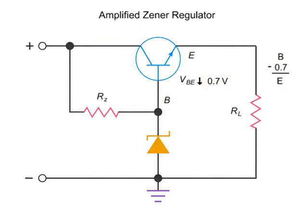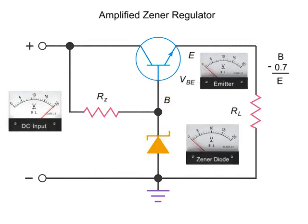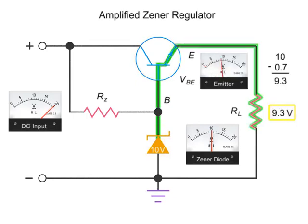Now, if we change the Zener value, observe how the transistor drops the value down 0.7. So at the emitter and the RL load resistor, we see a voltage that is 0.7 volts less than what the Zener diode permits at the transistor base. Thus, if we change the Zener diode value to 10, then the voltage at the transistor base is 10 volts. After passing through the transistor, the voltage drops to 9.3V, resulting in a 9.3V load at the RL resistor.